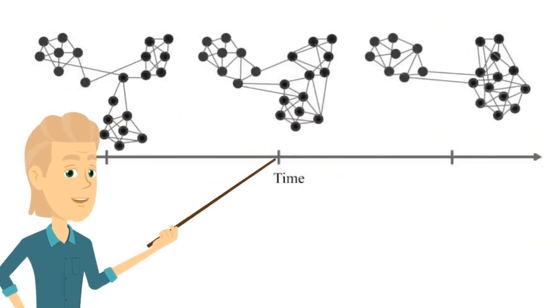These three networks dynamically interact with each other from second to second, minute to minute, generally becoming less modular when we're focused on tasks. The more modular they are before training in a resting state, the more we can benefit from our brain training.